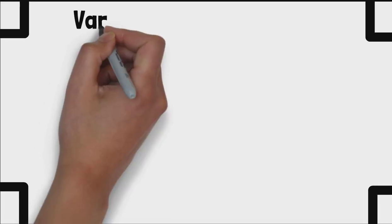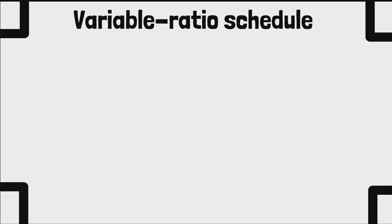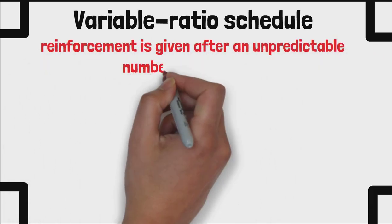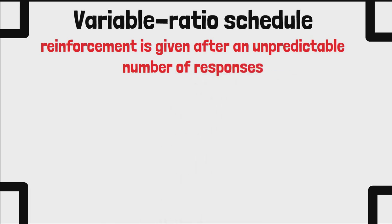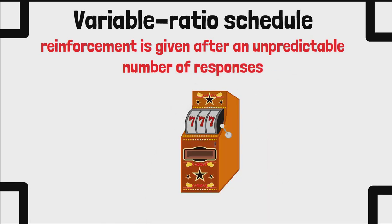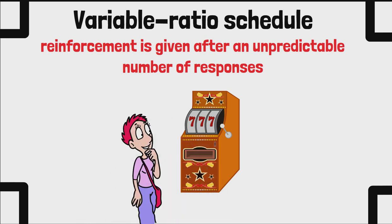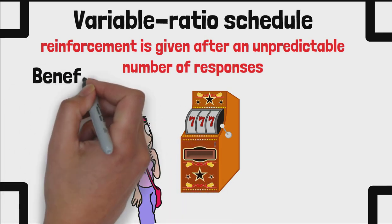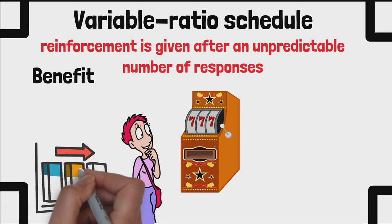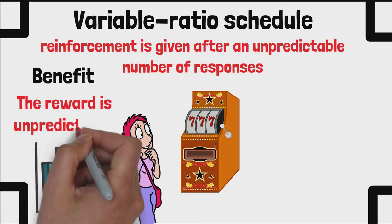Third is the variable ratio schedule. In a variable ratio schedule, reinforcement is given after an unpredictable number of responses. An example of this is gambling on a slot machine, where the player doesn't know how many plays it will take to win. The benefit of this schedule is that it tends to produce high and steady rates of response because the reward is unpredictable.